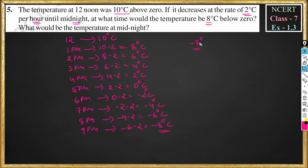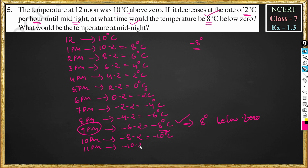So the answer to the first question: at what time would temperature be 8 degrees below zero? That is at 9 pm the temperature is 8 degrees below zero, that is minus 8 degree C. Now they are also asking what would be the temperature at midnight. At 10 pm it would be minus 8 minus 2, equal to minus 10 degree C. At 11 pm it will be minus 10 minus 2, equal to minus 12 degree C. And at 12 midnight temperature will be minus 12 minus 2, equal to minus 14 degree C. So at midnight the temperature would be minus 14 degree C, that is 14 degrees below zero.